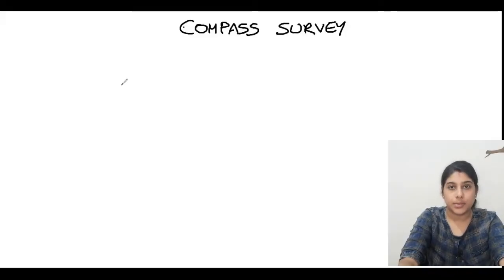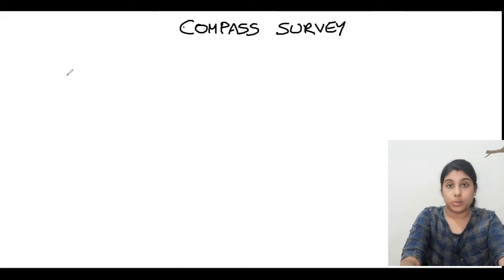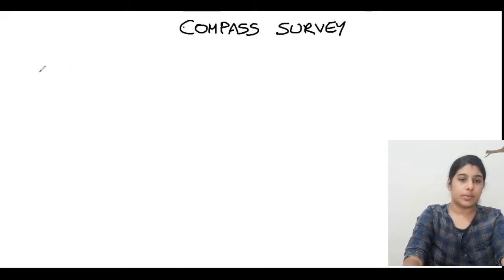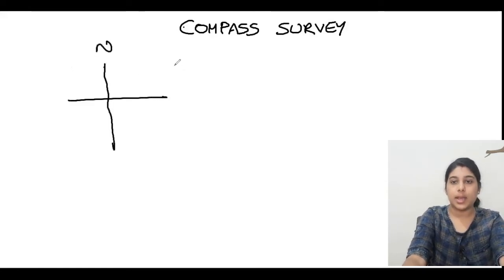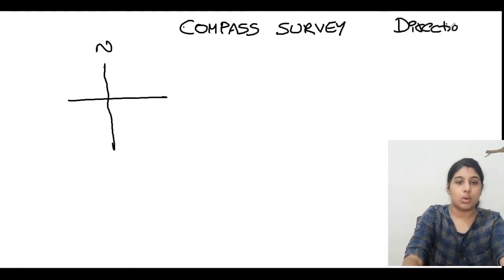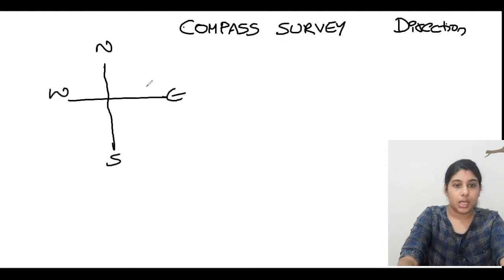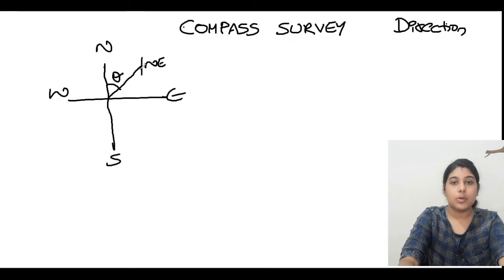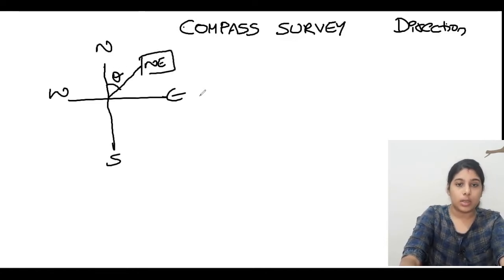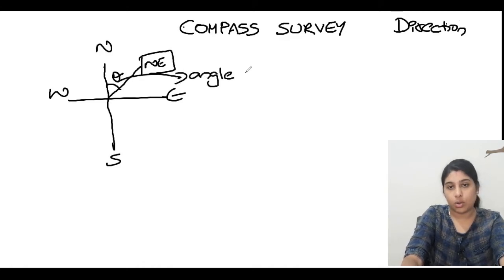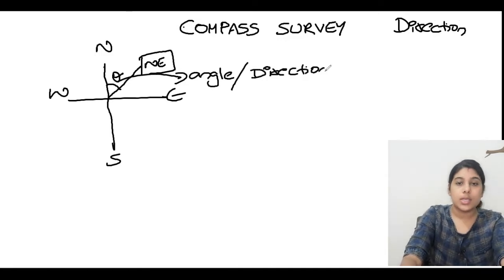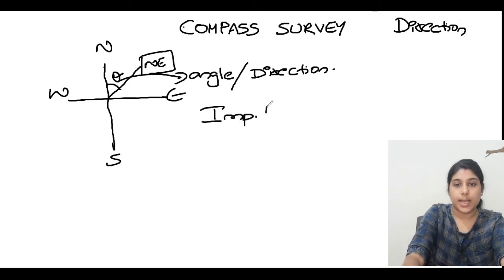We are going to start the new portion: compass survey. This is just an introduction, and next day onwards we will be discussing more definitions. When we talk about compass survey, the first thing that comes to mind is direction — north, south, east, west. If I mark an angle theta on a line, it could be the northeast portion, midway between north and east. This theta is called the angle, or in civil engineering terms, the direction.